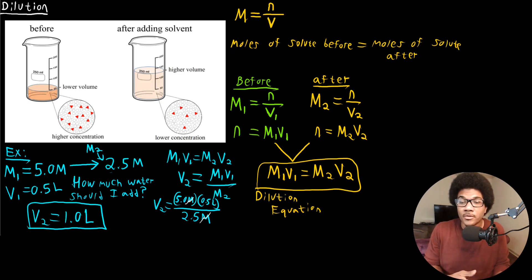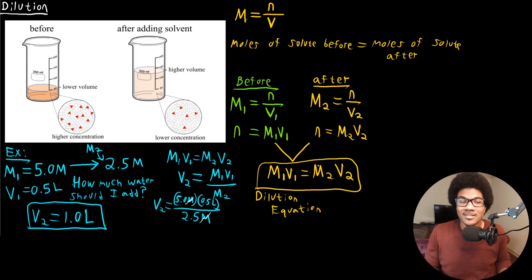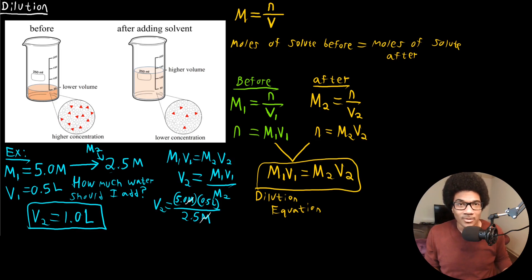Dilution is a really common technique in chemistry — buying things in bulk at high concentration and then taking what you need to make the diluted solution you want. The dilution equation lets you easily solve for the diluted concentration or the volume needed to make your diluted solution.